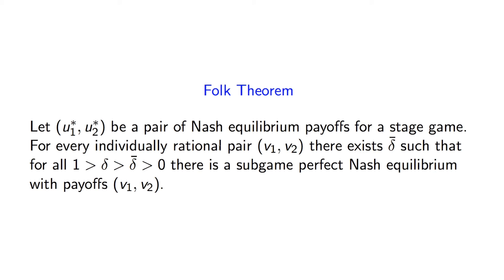It states that we can always find a discounting factor delta such that there exists a subgame perfect Nash equilibrium that ensures any individually rational payoff (v1, v2) will be obtained. In other words, we can adjust the probabilities of our game ending to incentivize behavior that is socially optimal to our two players.